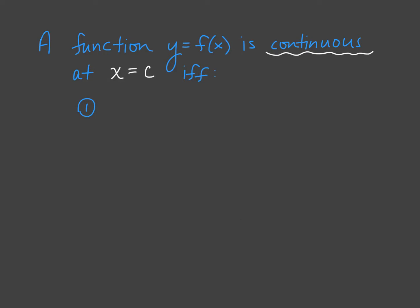There is a checklist of three things that we need to look at in order to determine if a function is continuous at x equals c. So a function f of x is continuous at x equals c if and only if the limit exists at x equals c, the function is defined at x equals c, and the limit and the function value equal each other.